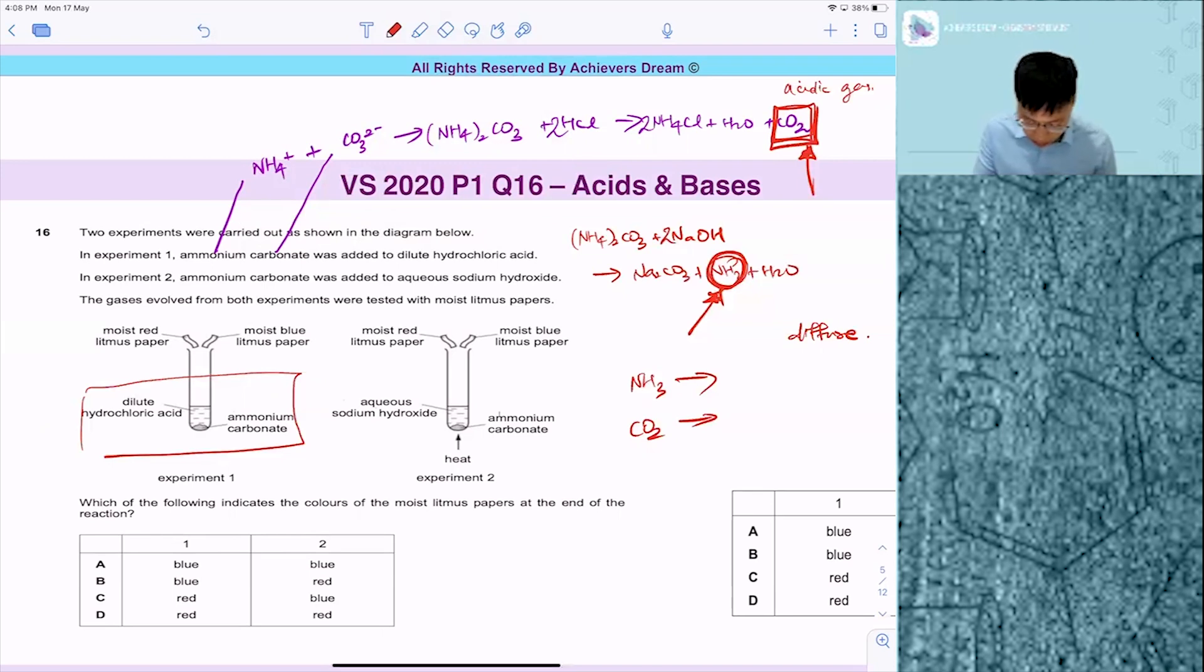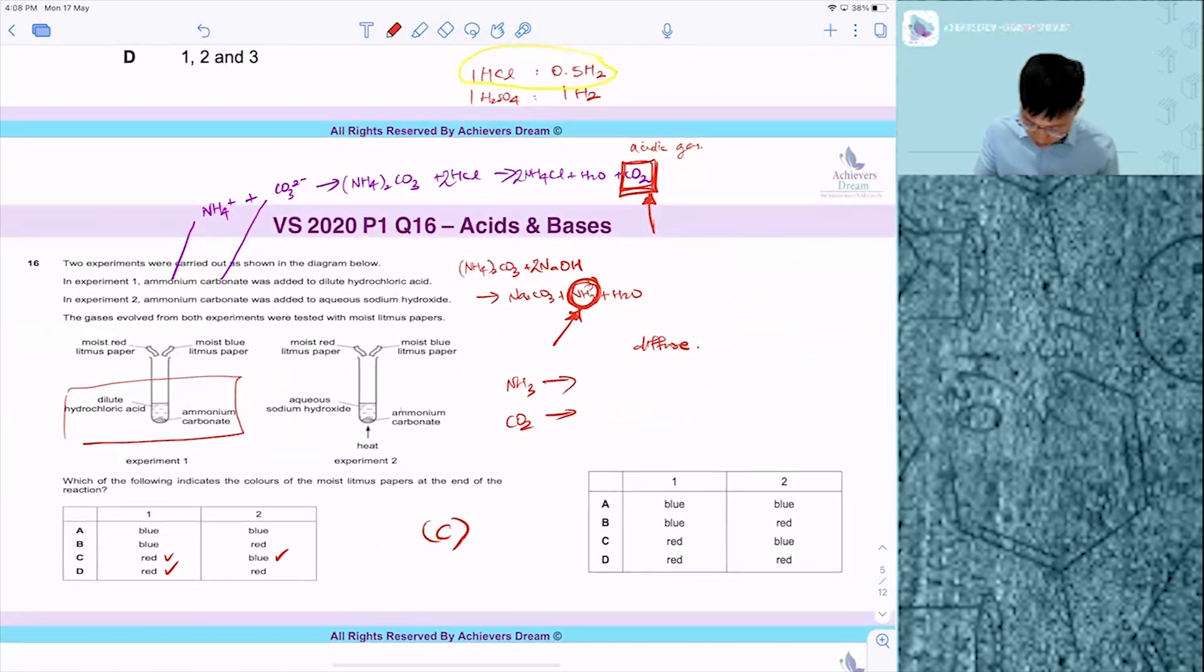On the other hand, if you have alkaline gas, alkaline gas will turn red litmus paper blue. So your answer is C. Ignore this paper here.